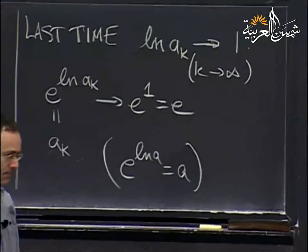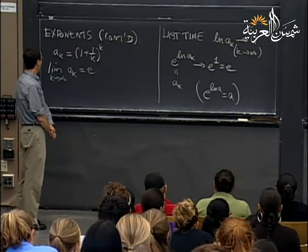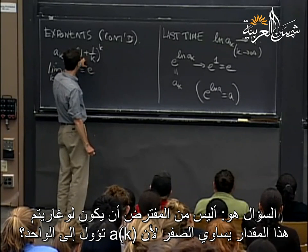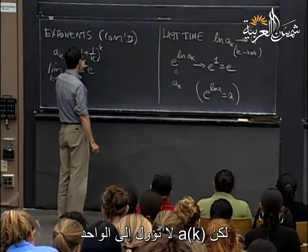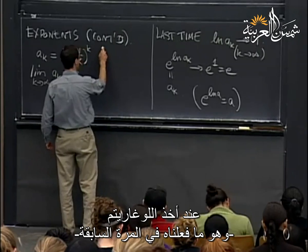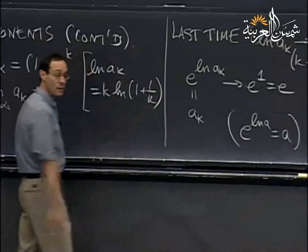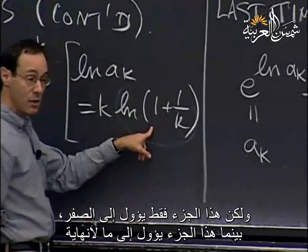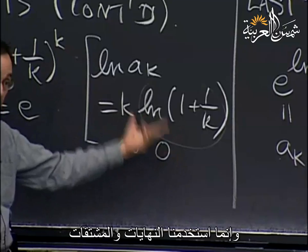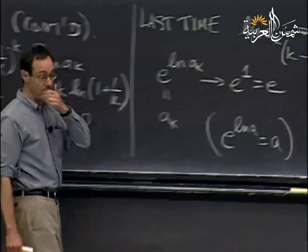A student asked: wouldn't the log of A_K be 0 because it's K multiplied by ln(1 + 1/K), and if K goes to infinity, that's ln of 1 which is 0? The answer: A_K isn't tending to 1. The logarithm of A_K is indeed K times the log of (1 + 1/K). That does not tend to 0. This part tends to 0 and this part tends to infinity — they balance each other in a 0 times infinity form. We did some cleverness with limits and derivatives to figure out this limit, and it turned out to be 1.